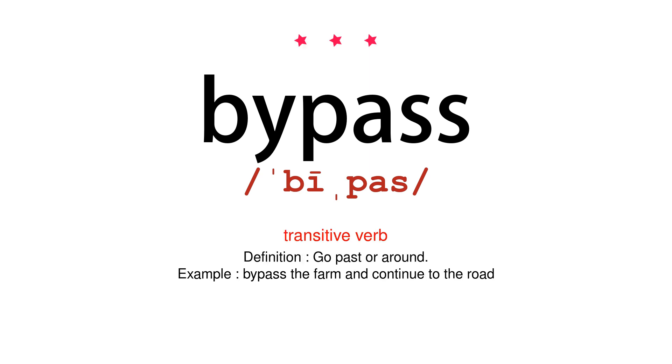Transitive verb. Definition: go past or around. Example: bypass the farm and continue to the road.